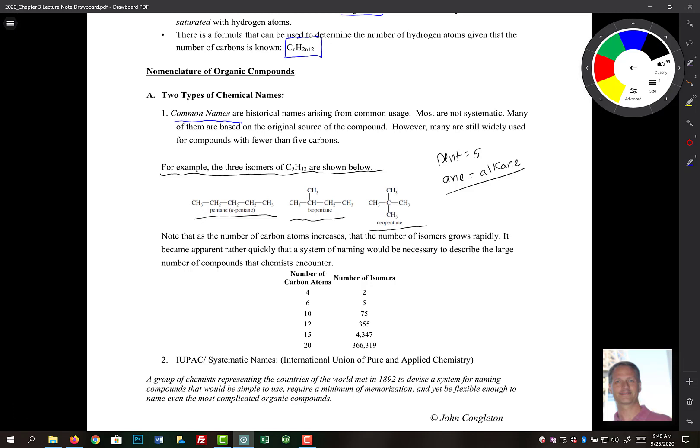Now the other arrangements are isopentane and neopentane, and those you should kind of be familiar with. But that's just for a molecule that has three isomers. So if we had to know common names of atoms that had more than three isomers, you could see it could be very tricky fairly quickly.